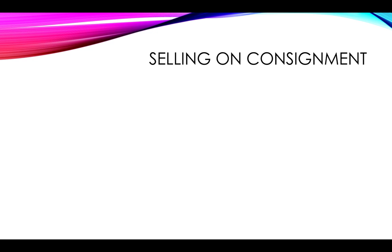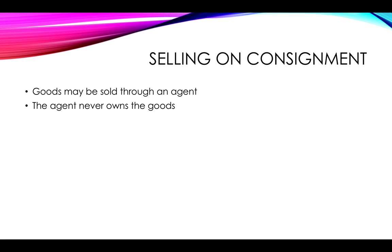What does this actually mean? Where goods are sold on consignment, it means that instead of selling to a particular retailer who would sell them on for you, you're going to sell them through an agent or somebody who is going to sell them on your behalf. However, they never actually own the goods themselves, so they don't carry the risk and you won't receive payment for the goods when you hand them over to your agent.